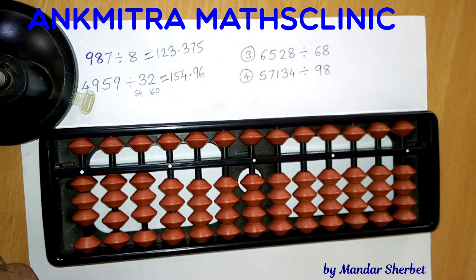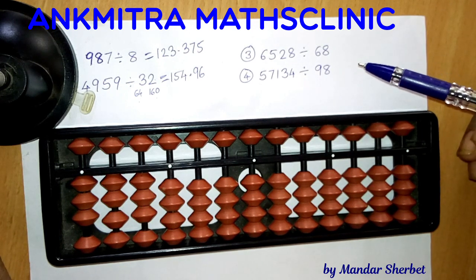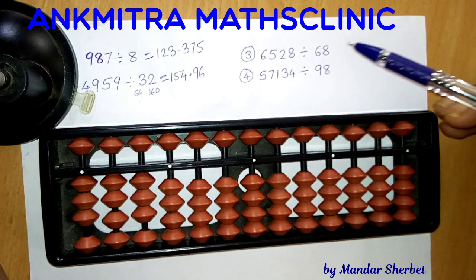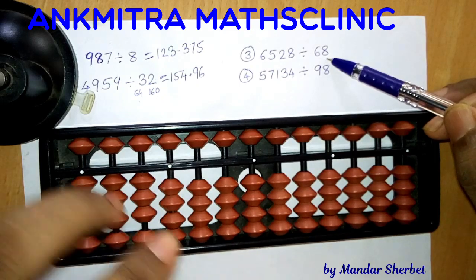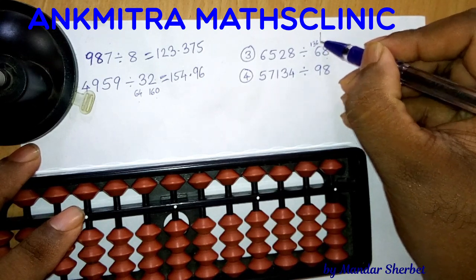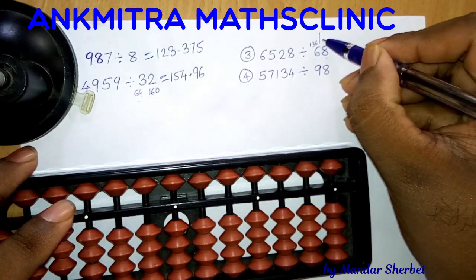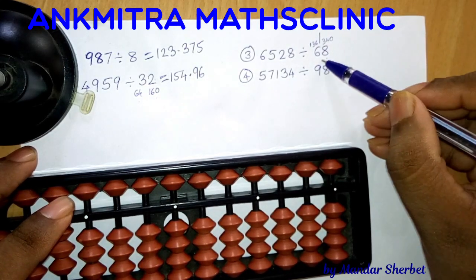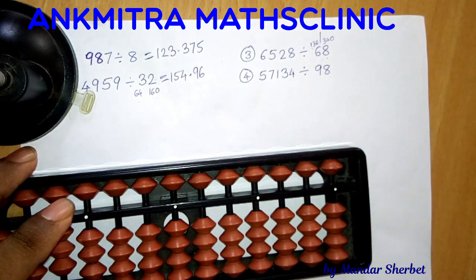Whenever we have a two-digit divisor whose table we're not very accustomed to, we need to be ready with two times that number and five times that number. Here the divisor is 68, so 2 times 68 is 136, and 5 times 68 is 340. So I know 1×68, 2×68, and 5×68 in front of me, and then I can start dividing.